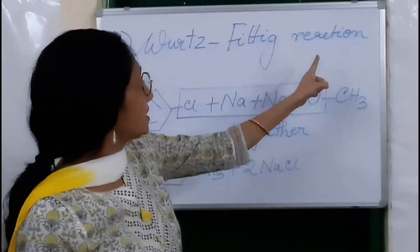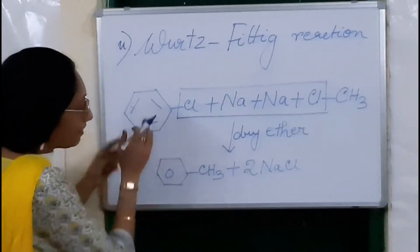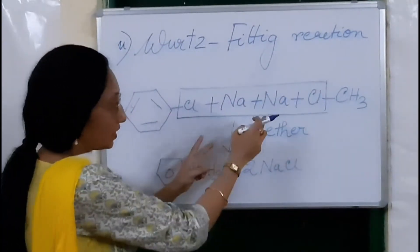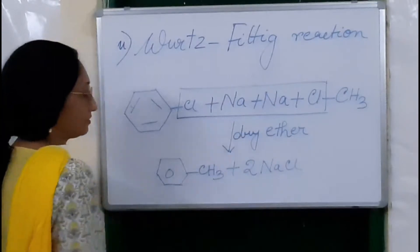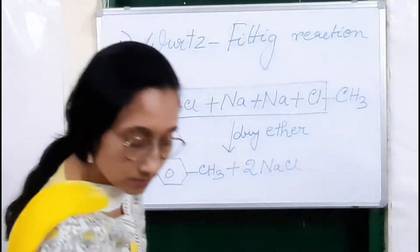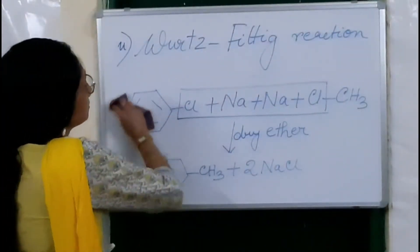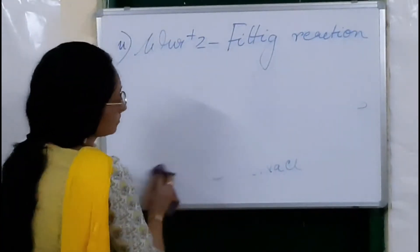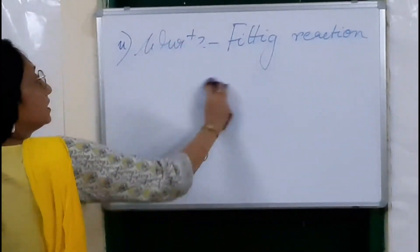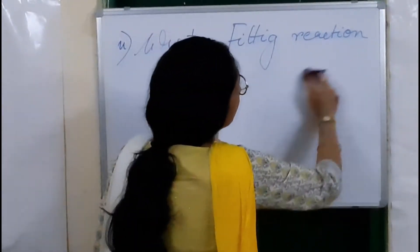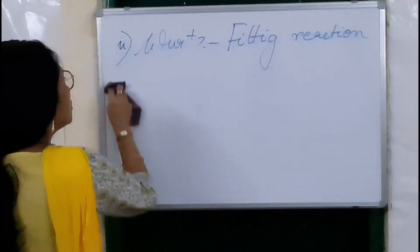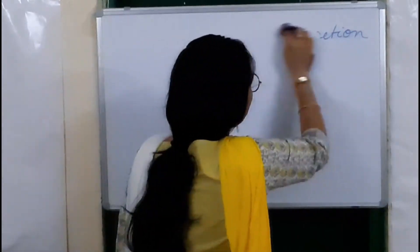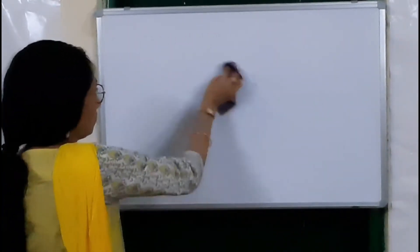In case of Wurtz-Fittig reaction, an aryl halide is combining with an alkyl halide in the presence of sodium and dry ether. So this is the method of converting halobenzene to toluene — in this case we have converted chlorobenzene to toluene.